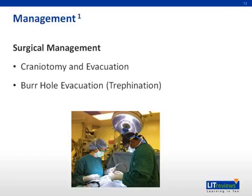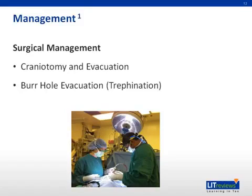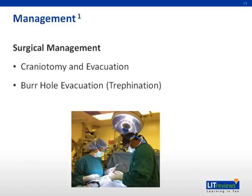Neurosurgeons play a critical role in managing epidural hematomas, and there are guidelines to aid surgical decision-making. If an epidural hematoma is greater than 30 milliliters in volume, surgery should be pursued regardless of examination or Glasgow Coma Score. If it is less than 30 milliliters, with less than 15 millimeters of thickness, less than 5 millimeters of midline shift, and a Glasgow Coma Score greater than 8 without focal deficits, nonoperative management may be appropriate. Surgical approaches include craniotomy with evacuation and trephination in urgent cases. Surgeons can also place invasive intracranial pressure monitoring devices such as a bolt.